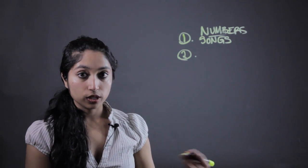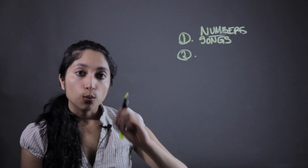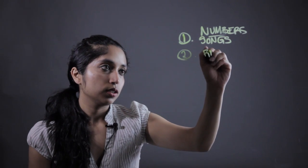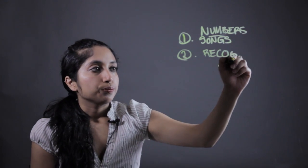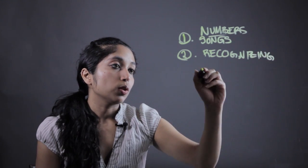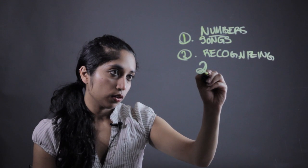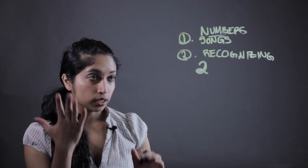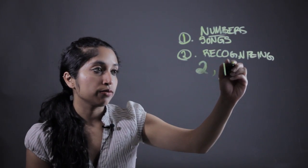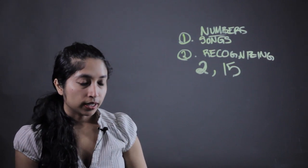The second thing we're going to want to do is recognizing written numbers. So say for instance, we're working on the number 2, just understanding that this physical number 2 right here means the 2 in the song that they were learning earlier. Or what the number 15 looks like, learning how to write it out.